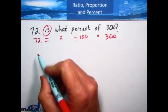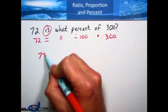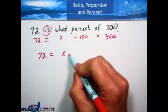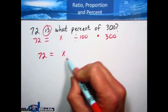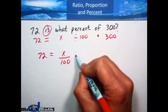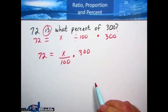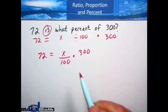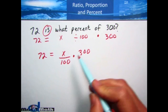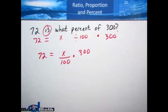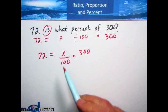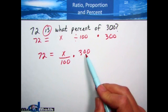What does that look like? It looks just like it says: 72 equals x divided by 100 times 300. Now let's look at what's happening to the x. X is being divided by 100 and multiplied by 300. Remember, to solve an equation, you undo what's being done to the variable.